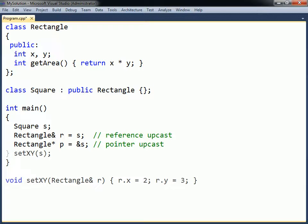For example, a Square object can be passed as an argument to a function that expects a Rectangle object. The derived object will then implicitly be upcast to its base type.